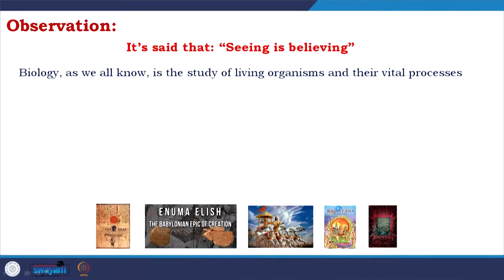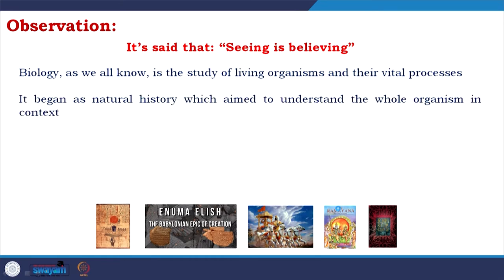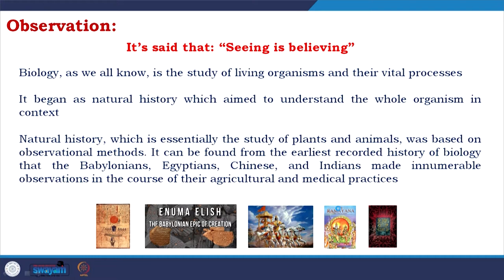Biology, as we all know, is the study of living organisms and their vital processes. It began as natural history, which aimed to understand the whole organism in context. Natural history, which is essentially the study of plants and animals, was based on observational methods — how people observed the behavior of plants and animals. A lot of drugs evolved and a lot of technologies came through that.